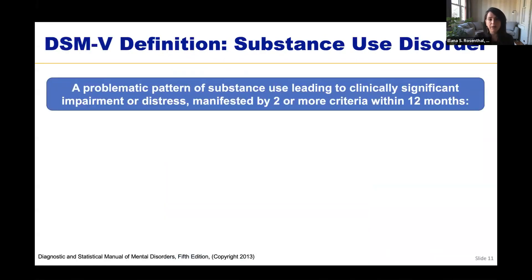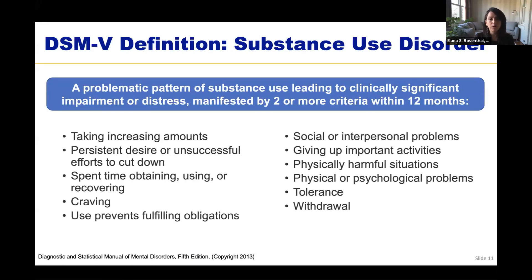As recommended in the TAPS, the definitive diagnosis of a substance use disorder occurs when a patient meets DSM-5 criteria. To meet criteria, a person must meet two or more of the following within 12 months: taking increasing amounts of the drug; persistent desire or unsuccessful efforts to cut down; time spent obtaining, using, or recovering from drug use; craving; drug use preventing fulfilling obligations; social or interpersonal problems due to drug use; giving up important activities; putting oneself in physically harmful situations; physical or psychological problems due to drug use; tolerance and withdrawal.